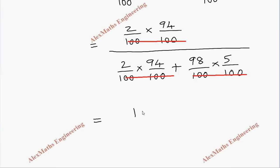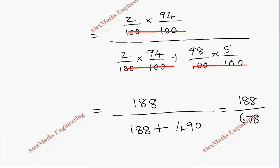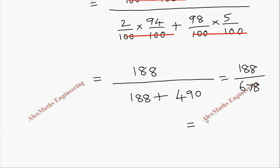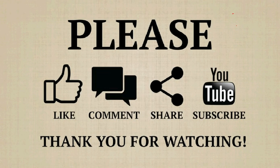Is 188 whole divided by 188 plus 490. Then this is 188 divided by 678. After division it is 0.2773. If I round off it will become 3 here. So its probability is 0.2773.